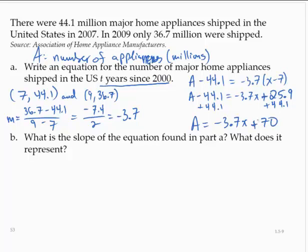All right. What is the slope telling us? So the slope, M, is negative 3.7. And if we think of it as negative 3.7 over 1, this was a number of appliances, and the 1 was in terms of years. So then, what is it saying?